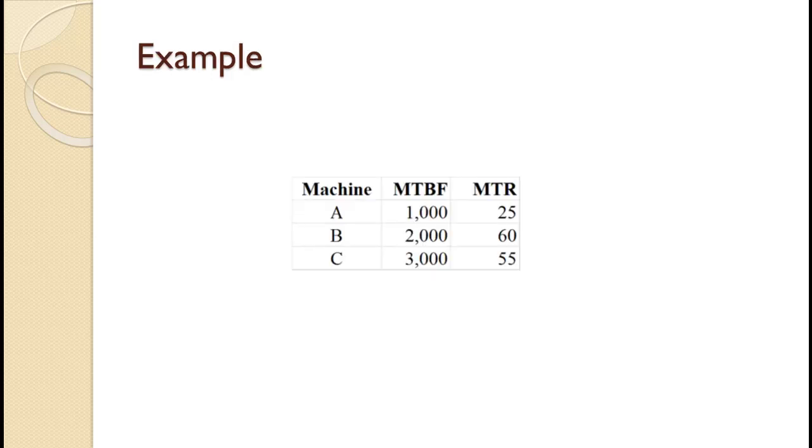A manufacturer has three machines. Machine A has a mean time between failure of 1,000 hours and a mean time to repair of 25 hours. Machine B has an MTBF of 2,000 hours and an MTR of 60 hours. Machine C has an MTBF of 3,000 hours and an MTR of 55 hours. Calculate the availability of each machine.